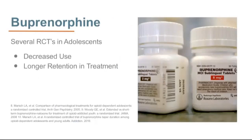What about adolescents? There have been several randomized controlled trials of individuals aged 12 to 17 being treated with buprenorphine for opiate use disorder, looking at those with moderate to severe opiate use disorder. We have seen that adolescents show decreased use and longer retention in treatment with buprenorphine. These studies compared cognitive behavioral therapy or contingency management versus cognitive behavioral therapy combined with buprenorphine. We functionally see what we know is true in the brain: individuals who have medications to help are better able to engage in treatment.